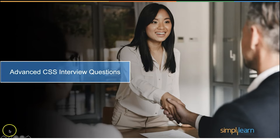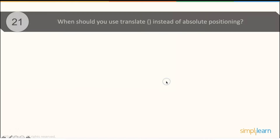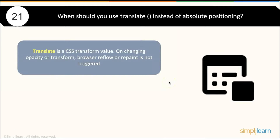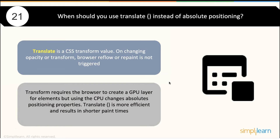Now let's look at advanced CSS interview questions. When do you use translate instead of absolute positioning? In CSS, the transform: translate value — when changing opacity or transform — does not trigger browser reflow or repaint. The transform requires the browser to create a GPU layer for elements, whereas absolute positioning uses the CPU. Therefore, translate is more efficient and results in shorter paint times.